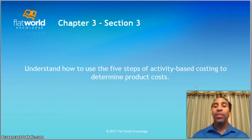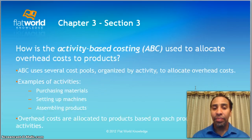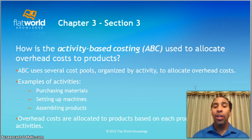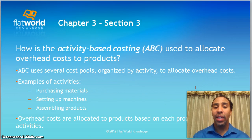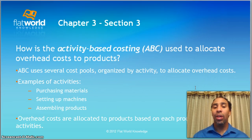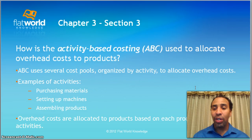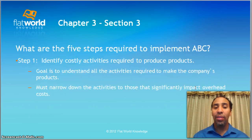Now let's understand how to use the five steps of activity-based costing to determine product costs. Activity-based costing, or ABC, uses several cost pools organized by activity to allocate overhead costs. Examples of activities are purchasing materials — what does it take to purchase those materials? — setting up machines, and assembling products. Overhead costs are allocated to products based on each product's use of the activities. The five steps required to implement activity-based costing are as follows.